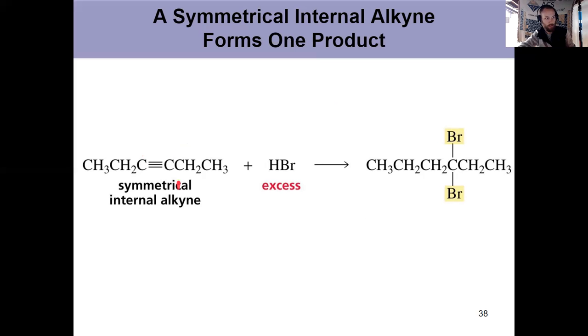However, it doesn't matter if you were numbering this left to right or right to left, it's carbon three both times. So even if both bromines added here, if you take that and flip it 180 degrees, it's the same product that's shown over here. So if it's a symmetrical internal alkyne, you only form one geminal dihalide because it's the same thing in 3D.